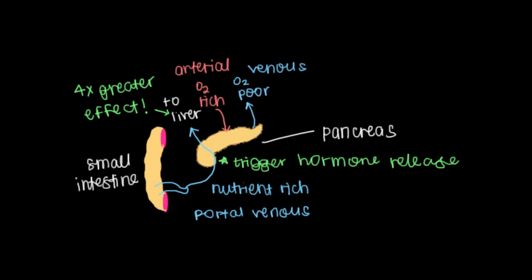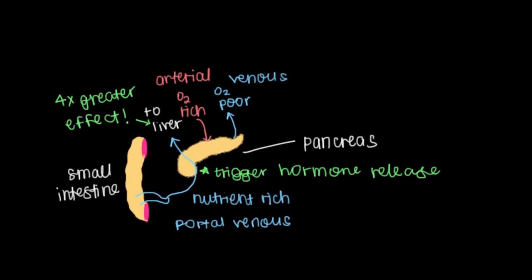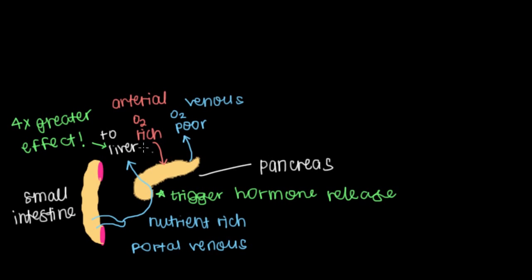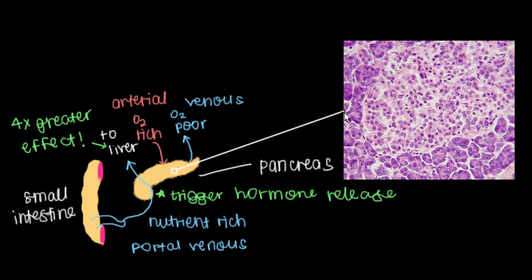But now the thing about the pancreas is that it doesn't just contain insulin and glucagon hanging out in random cells. They're organized. So if we blow up a small part of the pancreas right over here, we would see this, which is a collection of cells here like an island surrounded by other cells.